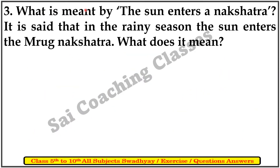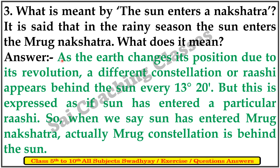Third question: What is meant by the sun enters a nakshatra? It is said that in the rainy season, the sun enters a new nakshatra. As the earth changes its position due to its revolution, a different constellation or rashi appears behind the sun every 30 degrees. But this is expressed as the sun has entered a particular rashi.